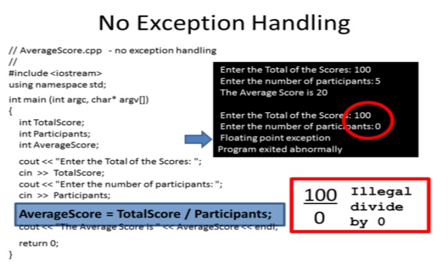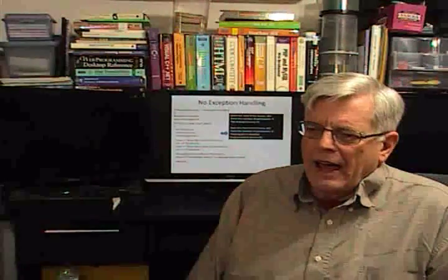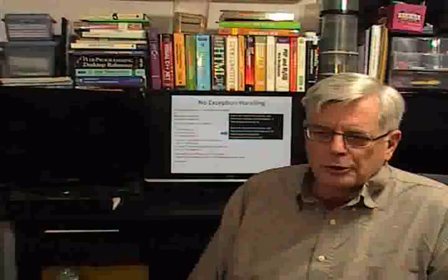The program tries to determine the average score by taking 100 and dividing by zero. Well, you can't divide by zero. The program exits abnormally and the program fails. So there could be a whole lot of other stuff after this that the program needs to do, but the whole program just dies.